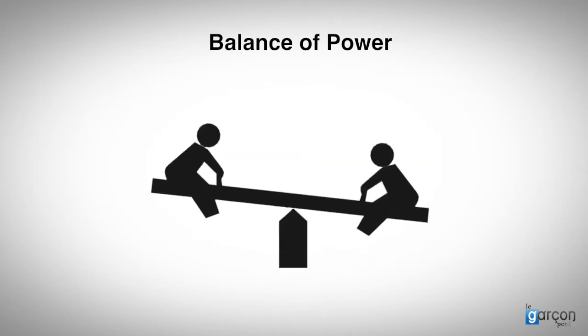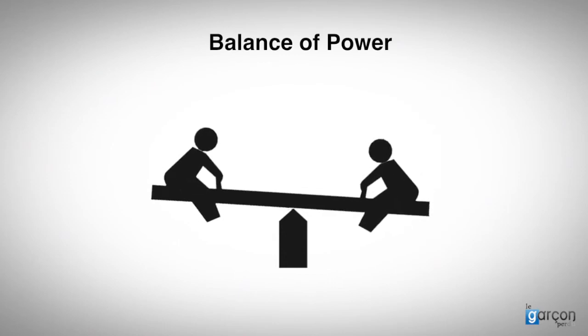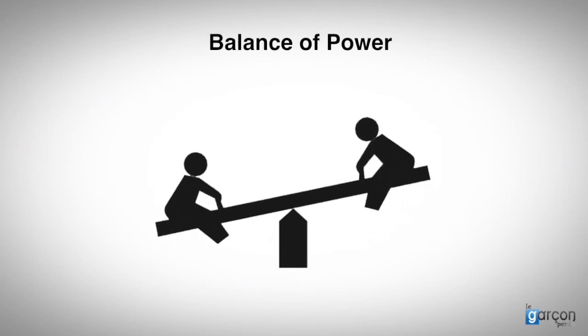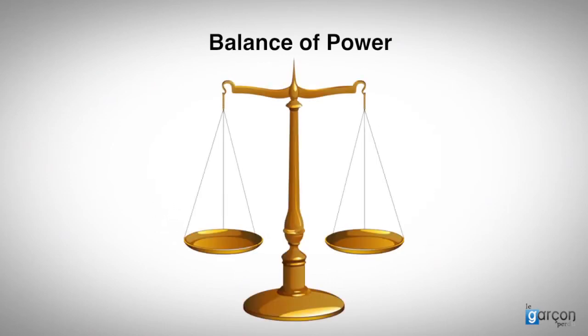The balance of power is the net dependence of one party on the other. Kralich suggested a number of criteria were needed to understand which party enjoyed the balance of power.